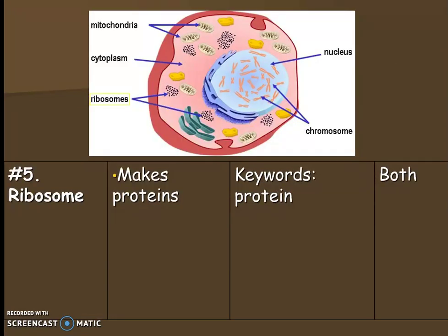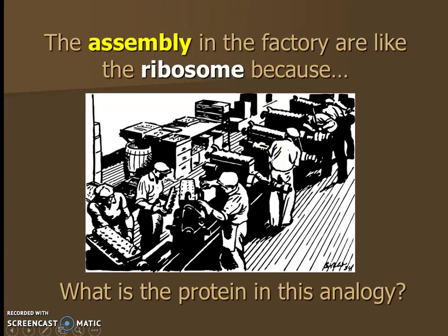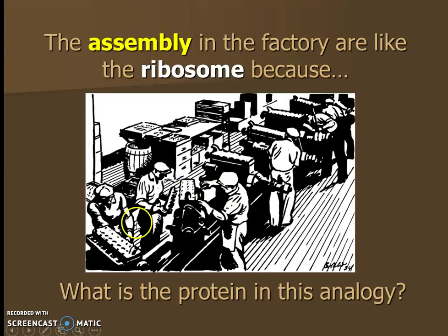Next, the ribosome. Ribosomes are in charge of making proteins. They appear as little dots or freckles of the cell. The keyword is 'proteins,' and they are found in both plants and animals. In the factory analogy, the ribosome is like the assembly line, because it is where something is made. It's a slightly harder analogy — the key point is that ribosomes make proteins.